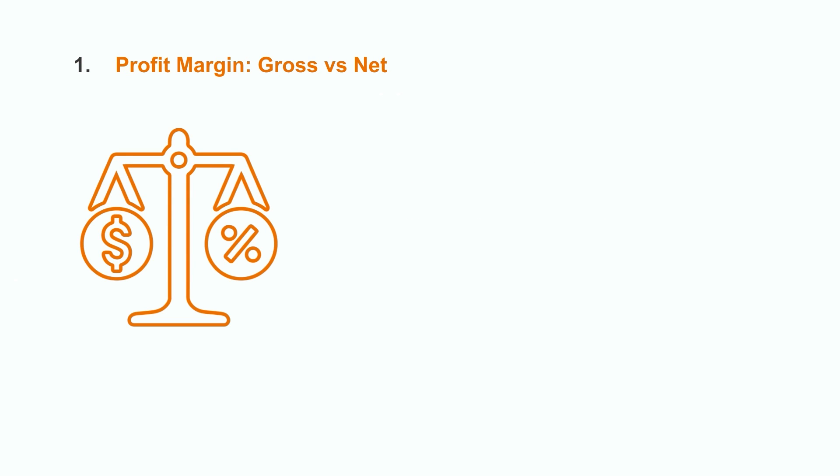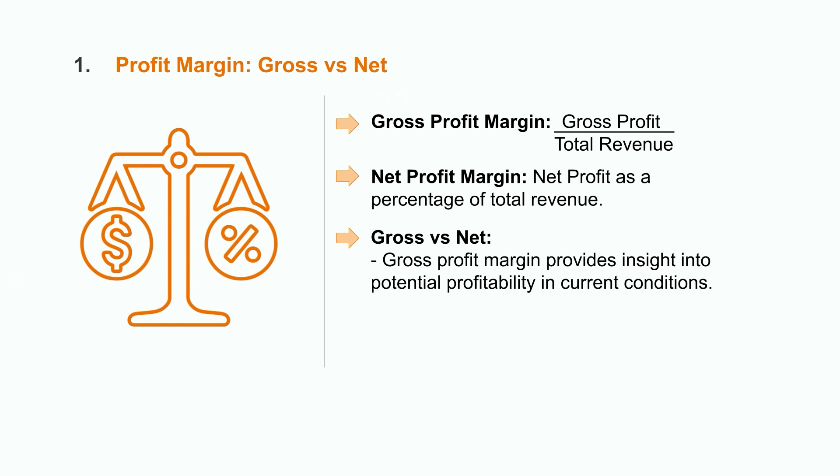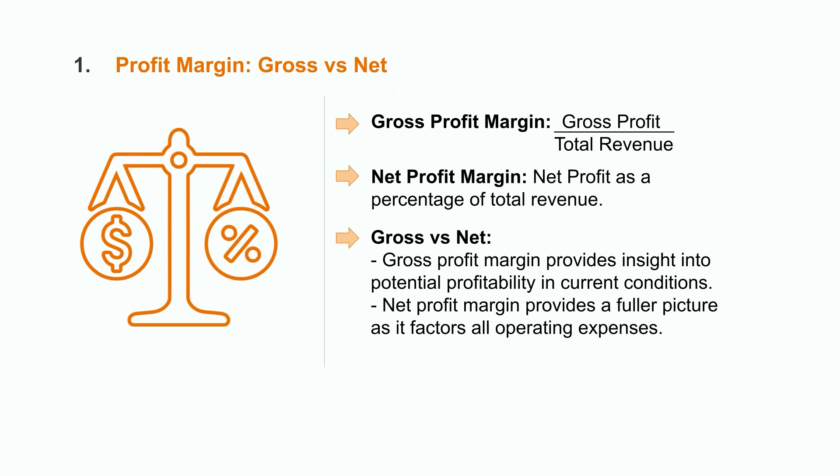First on our list is profit margin. The gross profit margin is the gross profit divided by total revenue, while net profit margin is the net profit as a percentage of total revenue. Which is better? Gross margin provides a sense of the potential profitability of the business in current pricing conditions. However, net profit margin gives us a more full picture as it factors in all of the company's operating expenses.